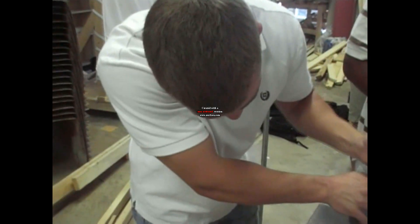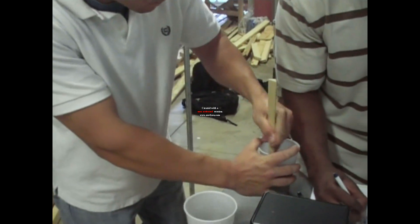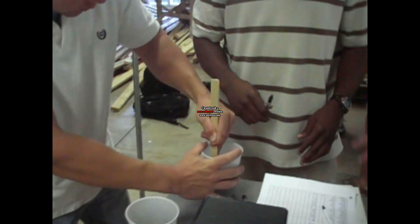We got 11 ounces total and we got 3.3 ounces of water. About 8 ounces of cement.